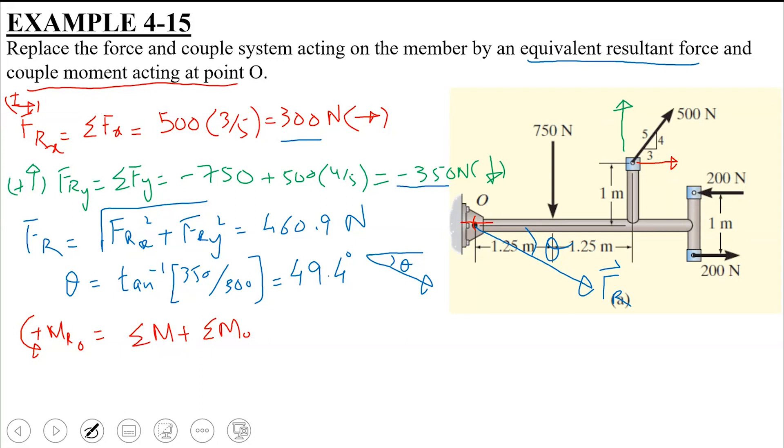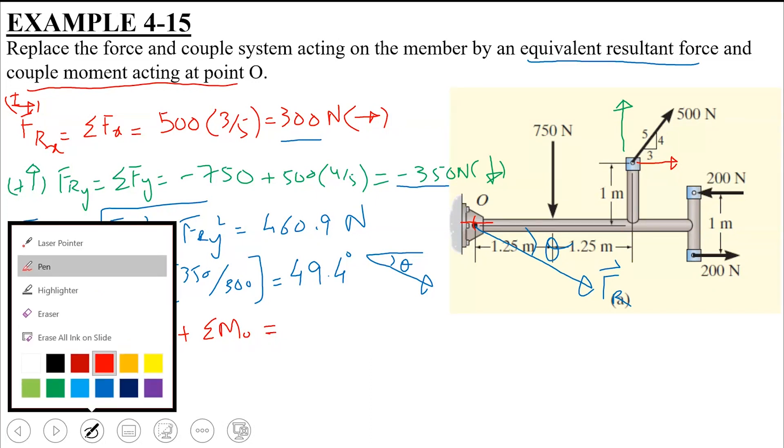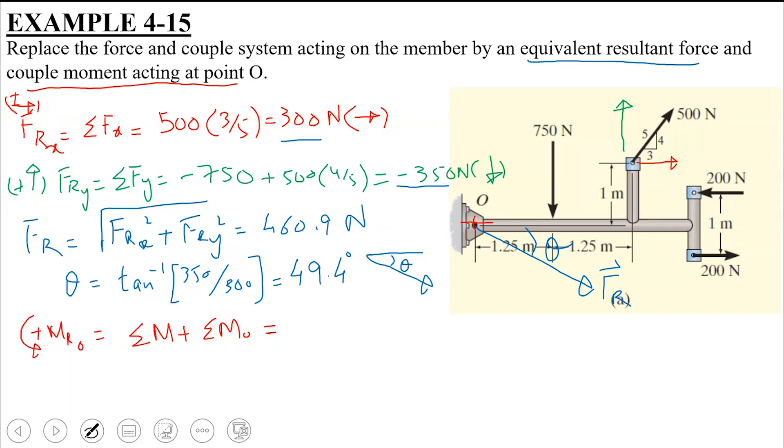What does summation M represent? Any volunteer students who can tell us? Applied couple. Applied couple. So in this case, what is the applied couple? Sir, it is 200. 200. Okay, so I write 200.